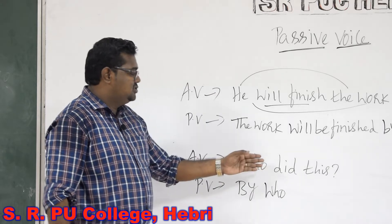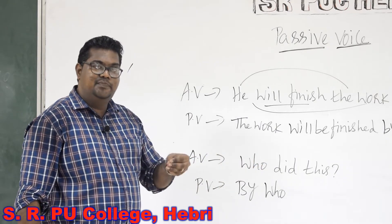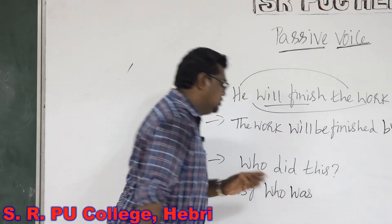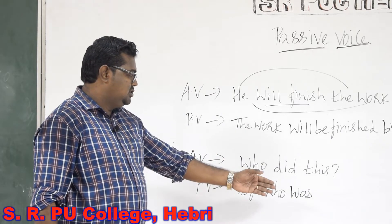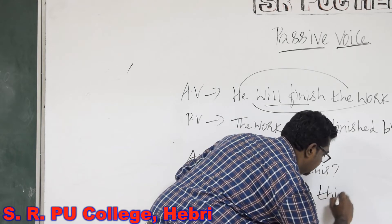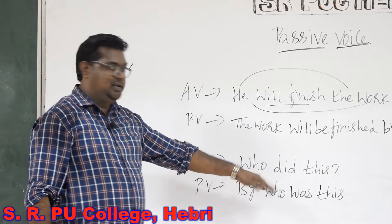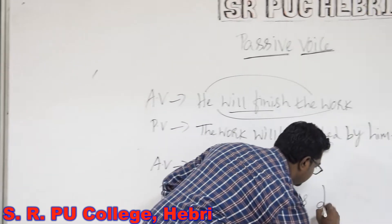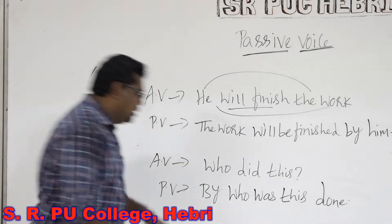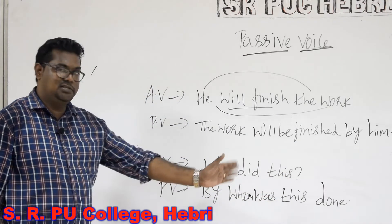The auxiliary for this particular word is 'was', because 'did' is in simple past tense. So you are supposed to write the auxiliary verb 'was'. Then the word 'this', and finally the past participle form of the main verb 'did', that is 'done'. So 'Who did this?' can be changed as 'By whom was this done?'